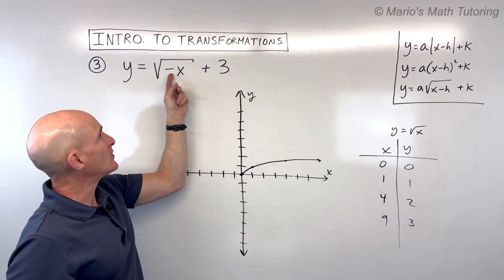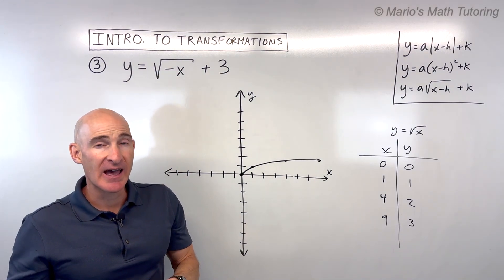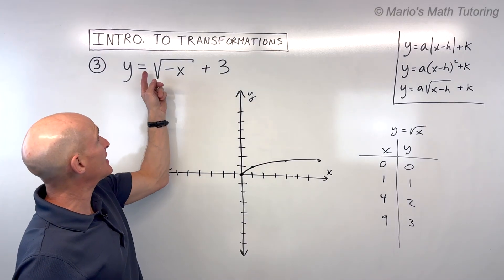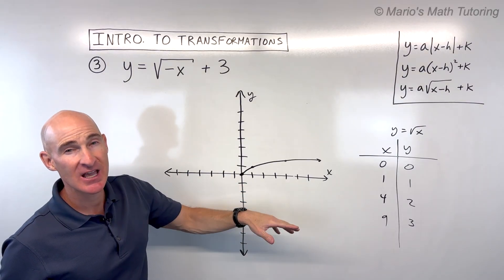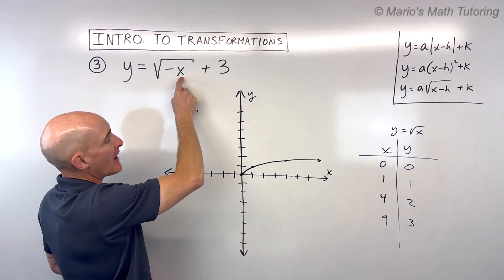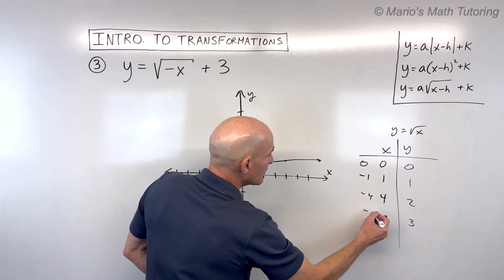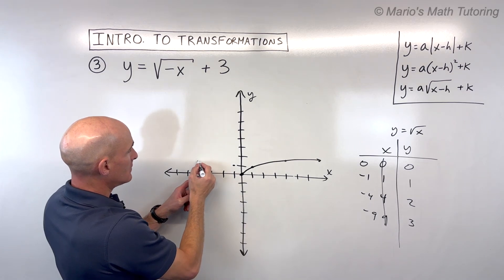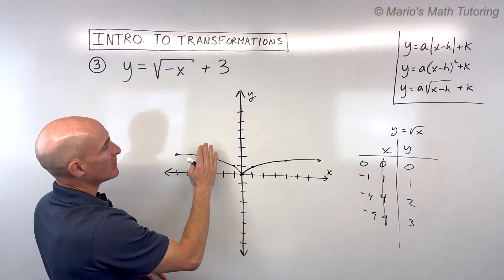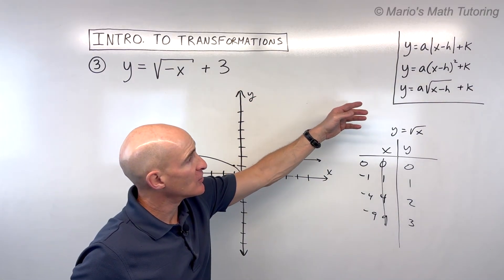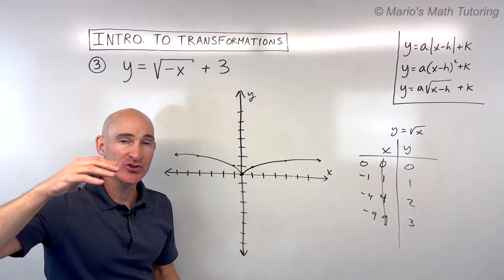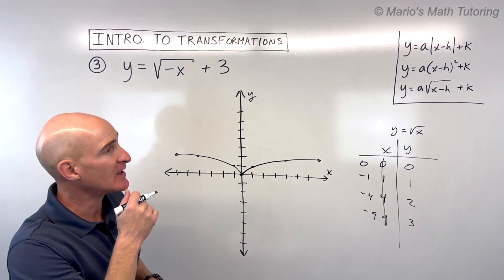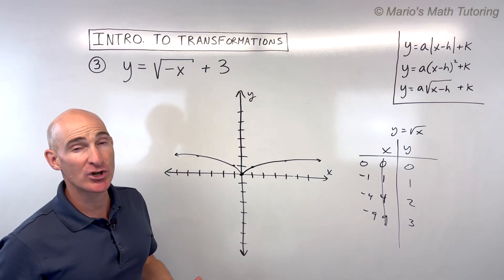When the negative is grouped with the x, it reflects over the y-axis. When the negative is out in front, it reflects over the x-axis. So I can multiply all the x values by negative one and cross out the old ones, or just do the mirror image reflecting over the y-axis. Always make sure you do vertical translations last — if you do it first and then apply a vertical stretch or shrink, you'll get a different graph. That's why for these basic ones, just work from left to right.